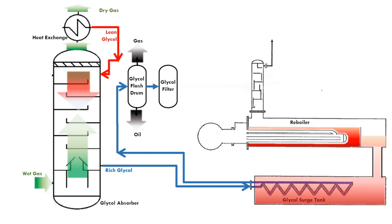The rich glycol then flows to the still column of the reboiler. The purpose is to remove the water. The glycol vapor condenses when it comes in contact with the cool glycol. Thus, condensed glycol will drop onto the tray in the still column and subsequently flows downwards.